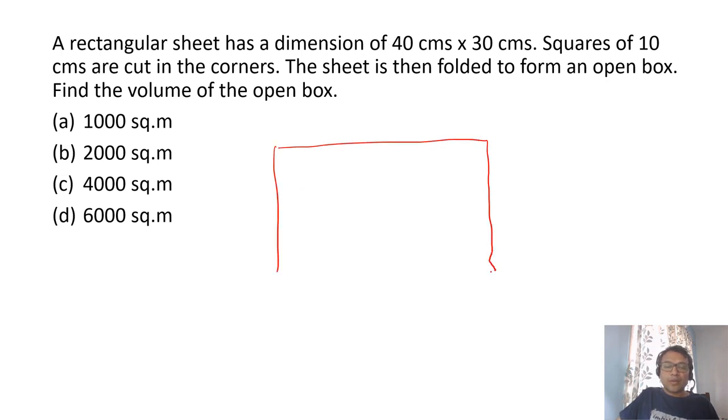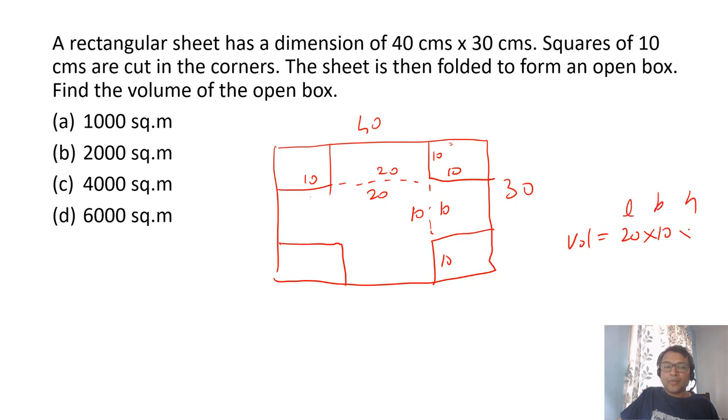So if I look at 40 by 30, a rectangular sheet, 10 centimeters cut everywhere. If 10 centimeters cut, then this will become 20 because 10 and 10 is cut. So this becomes 20 and this becomes 10. So base of the box becomes 20 and 10 and the height becomes 10. So volume will become 20, 10, length, breadth and height and 10, which will become 2,000 square meters. Just draw, understand the figure and you should be able to get the answer.